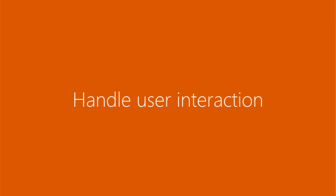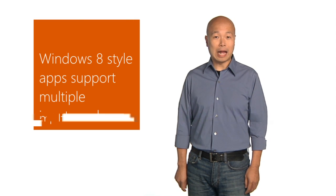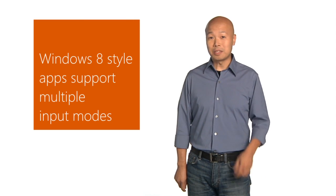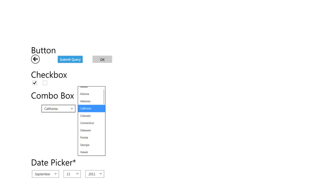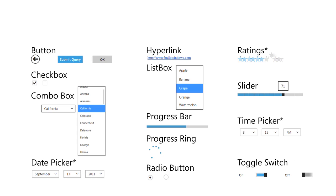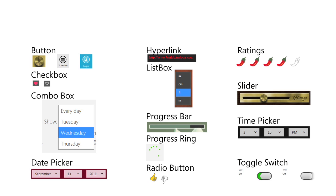Handle user interaction. Although touch is a primary mode of interaction for Windows Store apps, it is not replacing the mouse, keyboard, or stylus. The speed, accuracy, and tactile feedback that these traditional input modes provide are familiar and appealing to many users. With this in mind, the built-in controls are designed from the ground up to be touch-optimized while ensuring consistent and engaging interaction experiences across all input modes.